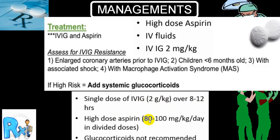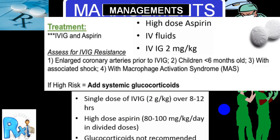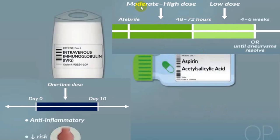Glucocorticoids are usually given in the resistant variety, but you should also look at contraindications of glucocorticoids in children. Starting with an anti-inflammatory — aspirin — on day one will decrease the risk of coronary artery aneurysm. Use of IV immunoglobulins early in the disease is very helpful in reducing the risk.